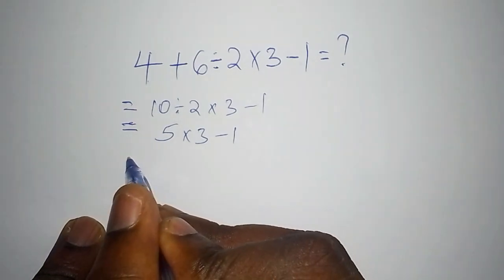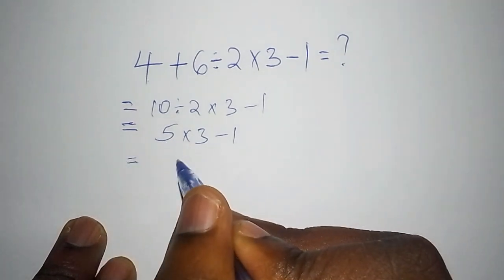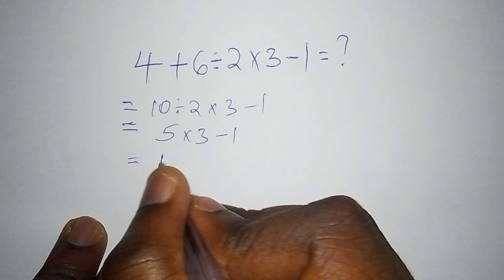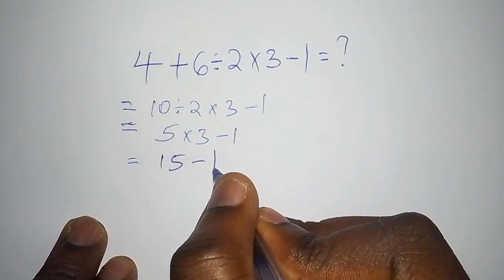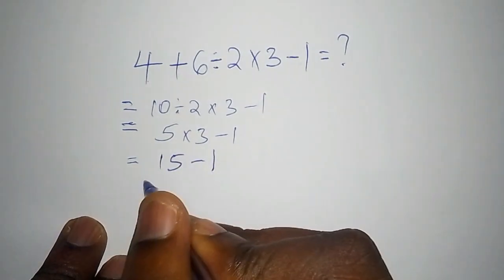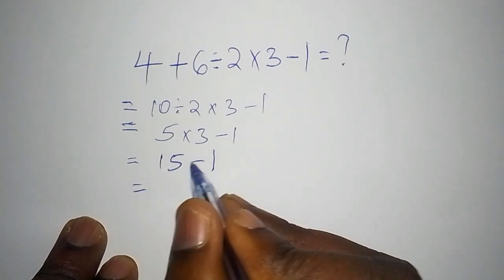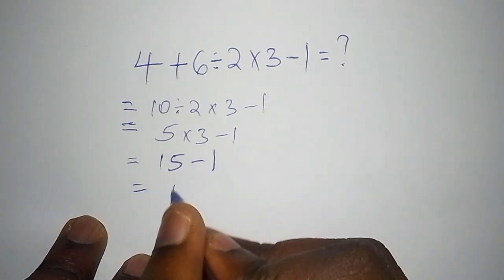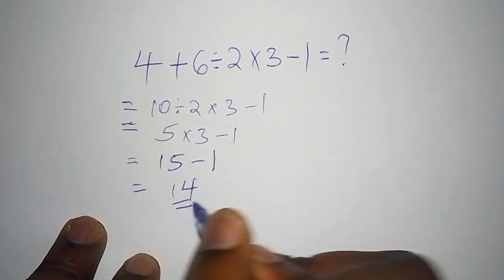Then their final step is 5 multiply by 3 which becomes 15, then 15 subtract from 1. So 15 minus 1 we have the answer as 14, then they say that the answer is 14.